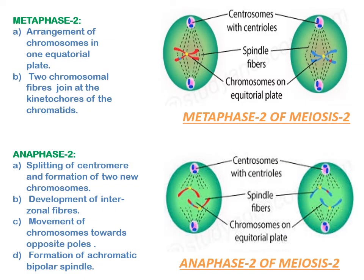In metaphase 2, chromosomes arrange on one equatorial plate, and each centromere is joined by two chromosomal fibers at the kinetochores of the chromatids. In anaphase 2, there is splitting of the centromere of each chromosome, forming two new daughter chromosomes. Interzonal fibers develop between the centromeres of daughter chromosomes, and the daughter chromosomes move towards opposite poles.